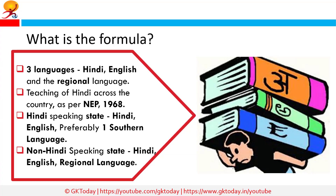So what is the three-language formula? It is commonly understood that the three languages refer to Hindi, English, and the regional language of the respective states. Though the teaching of Hindi across the country was part of a long-standing system, it was crystallized into a policy in an official document only in the national policy on education in 1968.